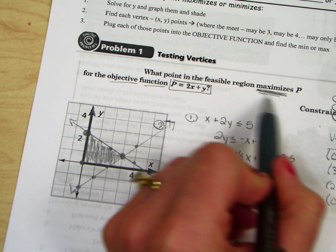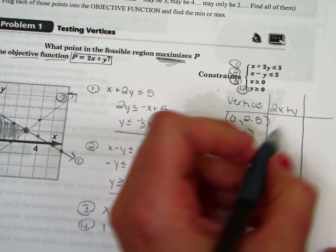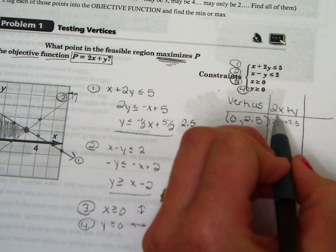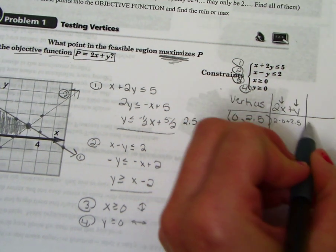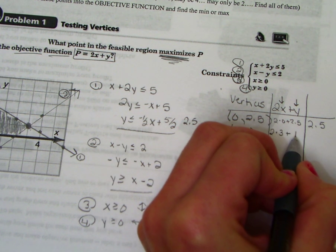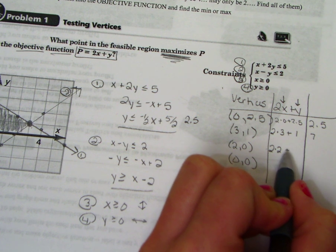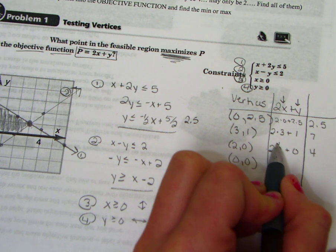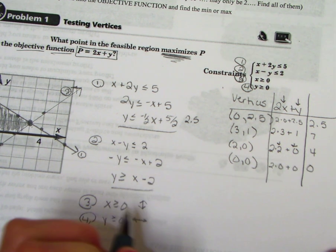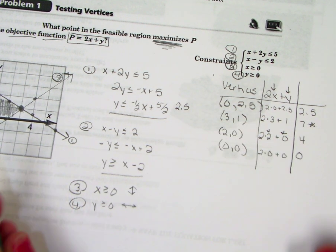And our goal is to find the points and maximize the profit. Sometimes you'll minimize. This time we're maximizing. Let's plug in 0 for x. So we get 2 times 0 plus 2.5. When you multiply that out, because I'm plugging it in for x and for y, we will end up getting 2.5. Now let's plug in 3, 1. So I'll do 2 times 3 plus 1. That's 2 times x plus y. That's 7. Then I'll do 2 times 2 plus 0. That's 4. Again, I plugged in for x and I plugged in for y. Then I'll do 2 times 0 plus 0 is 0.